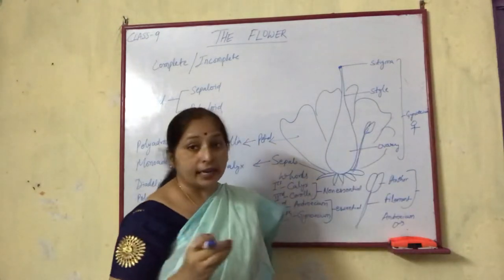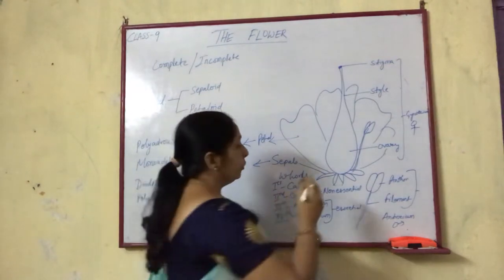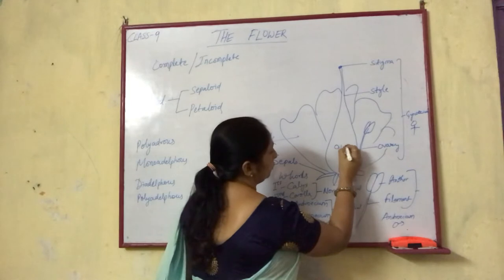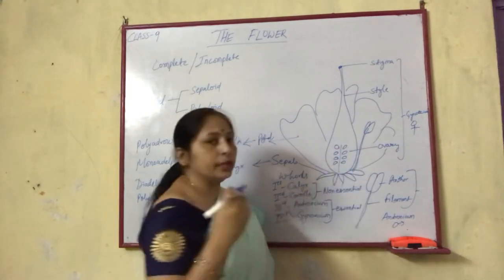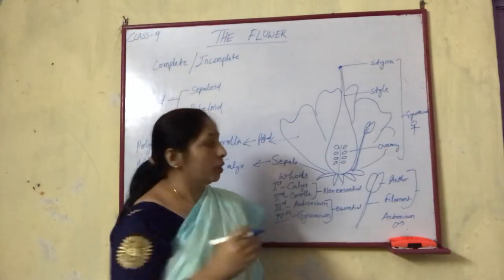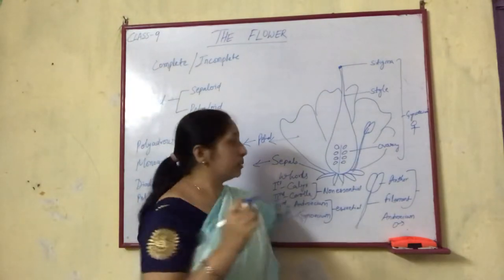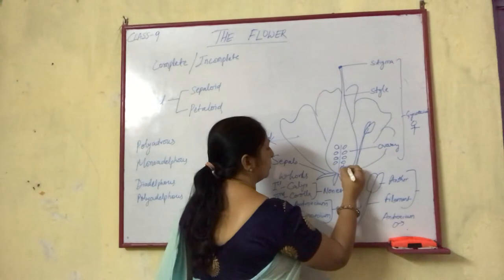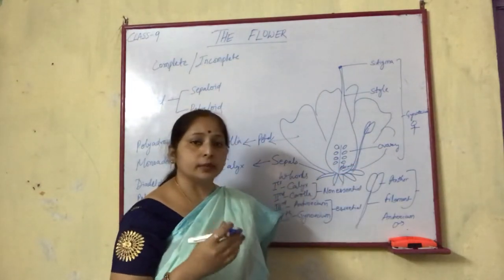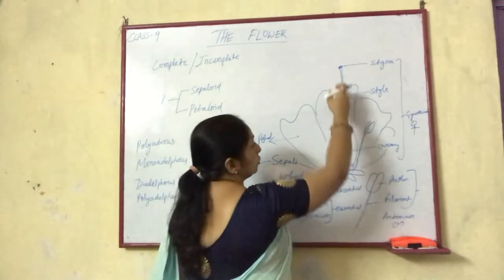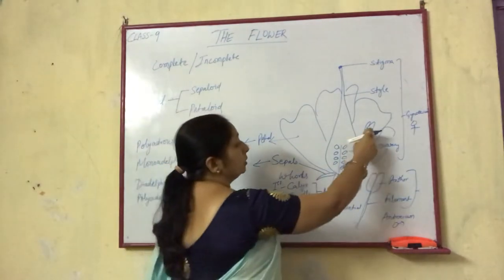The long slender tube is the style, which ends into a swollen base called the ovary. Inside the ovary, ovules are present. The arrangement of ovules inside the ovary on the membranous tissue — that tissue is termed as placenta. The arrangement of ovules on the placenta is termed as placentation.